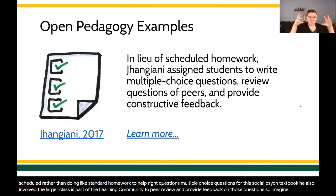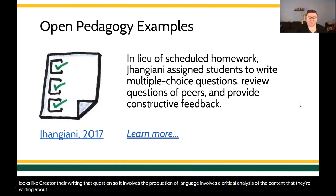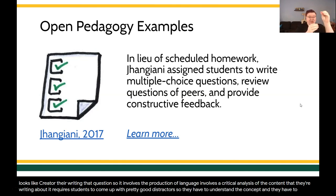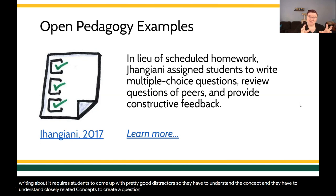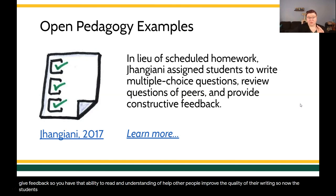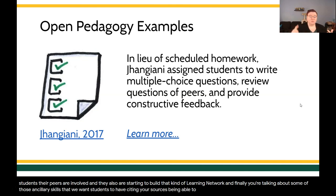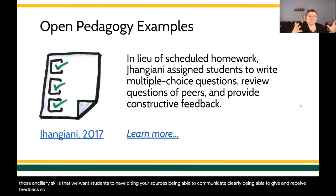Imagine what that looks like. It means the student is being a creator — writing that question — which involves the production of language and the critical analysis of the content they're writing about. It requires students to come up with pretty good distractors, so they have to understand the concept and closely related concepts to create a good question. We're also talking about involving peers as people who give feedback — the ability to read, understand, and give critical feedback to help others improve the quality of their writing. Students and their peers are building that kind of learning network, along with ancillary skills like citing sources, communicating clearly, and giving and receiving feedback.